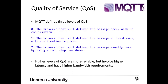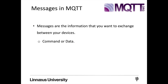MQTT defines three levels of Quality of Service: 0, 1, and 2. At level 0, the client or broker delivers the message with no confirmation. At level 1, a confirmation is required that the message was delivered. At the highest level, QoS 2, the broker or client delivers the message exactly once using a four-step handshake. Messages are the information exchanged between devices, and can be a command or data.